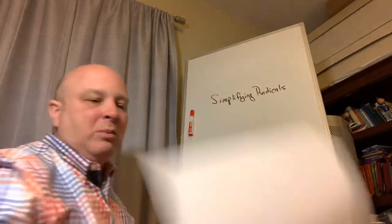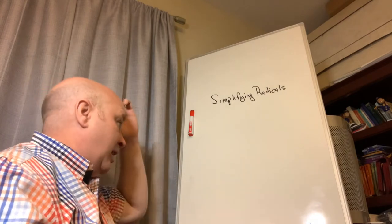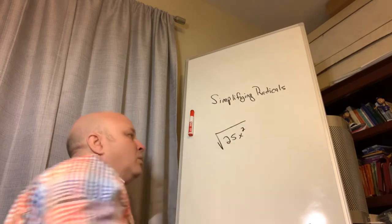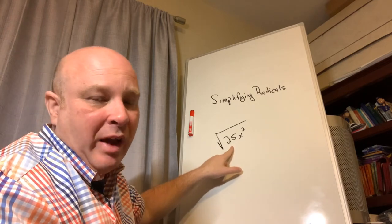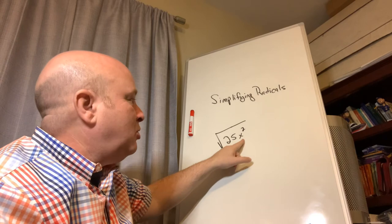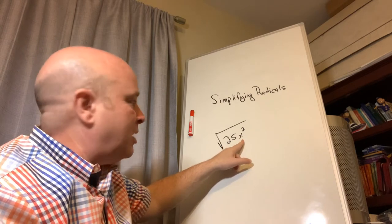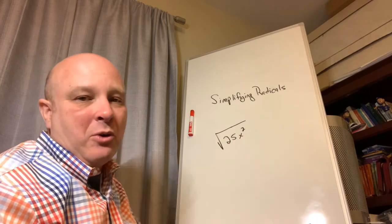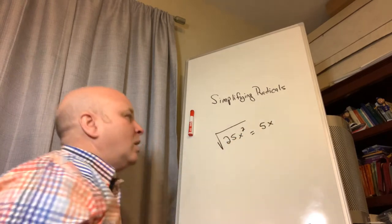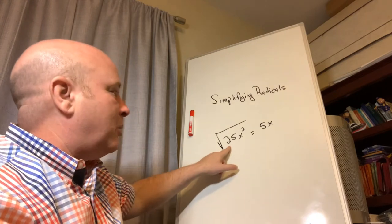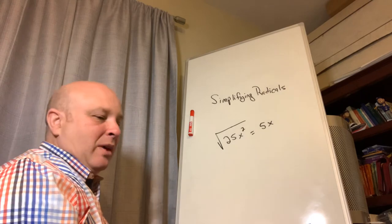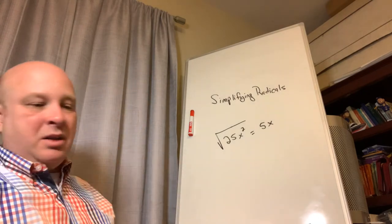Now let's look at variables. The square root of 25x² — 25 is a perfect square (5 times 5), and the square root of x² is x because x times x is x squared. I can take both out and eliminate the radical entirely, so the square root of 25x² equals 5x.